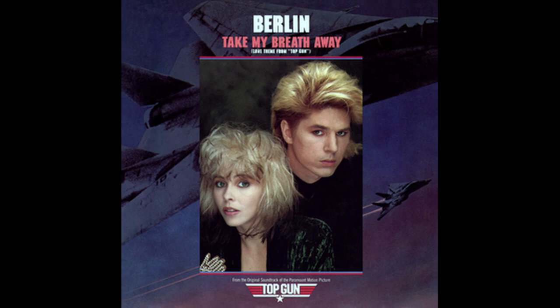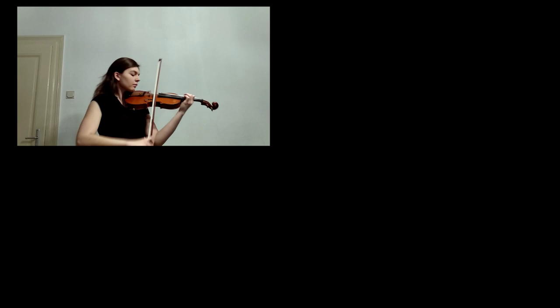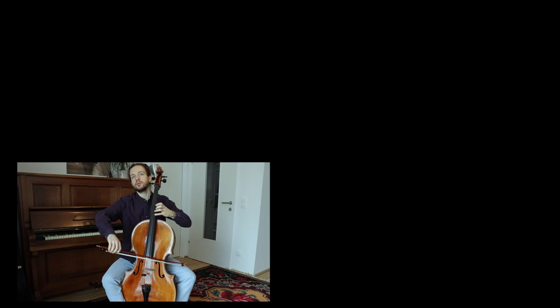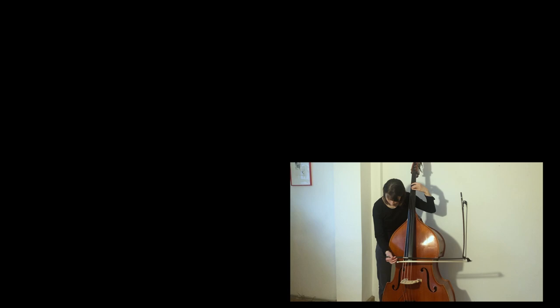The second verse of this aria is about death. God takes the animal's breath away and they vanish into dust. Haydn uses solely strings in this part. Strings are a group of instruments consisting of violins, violas, and basses.